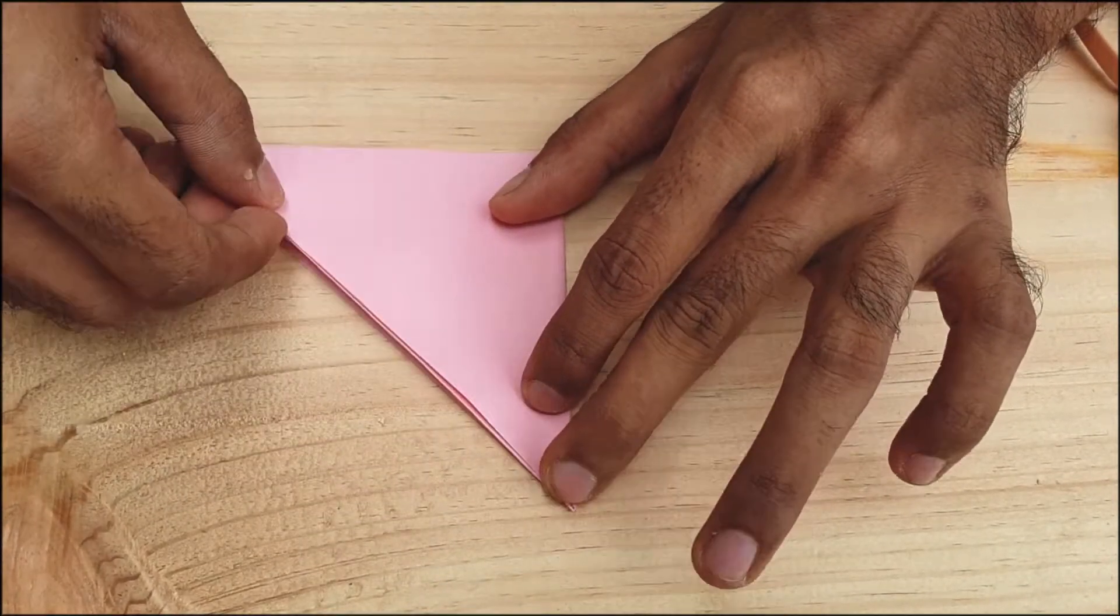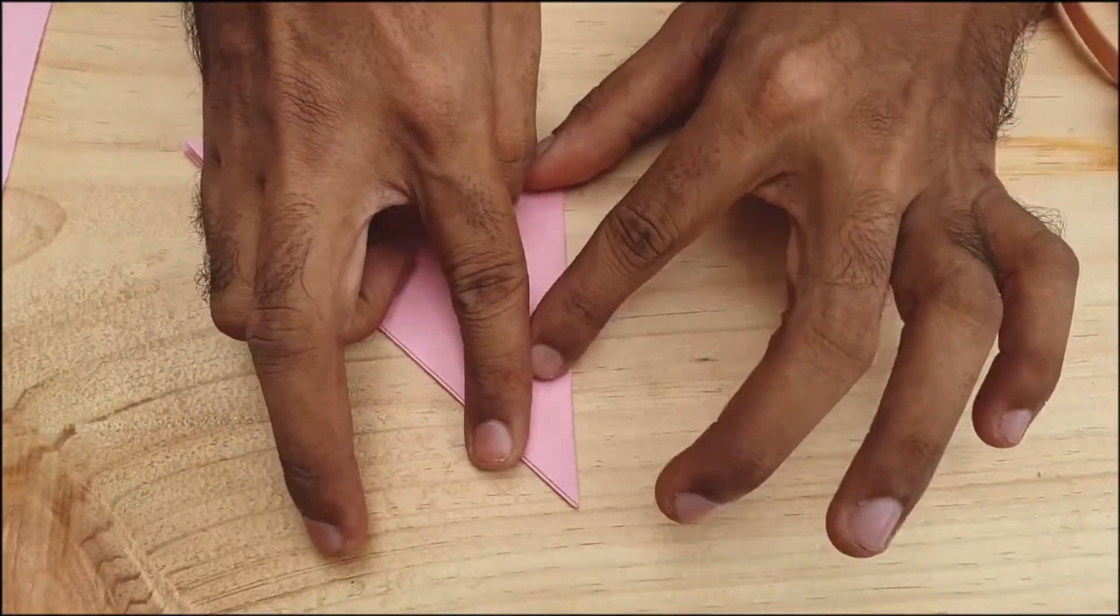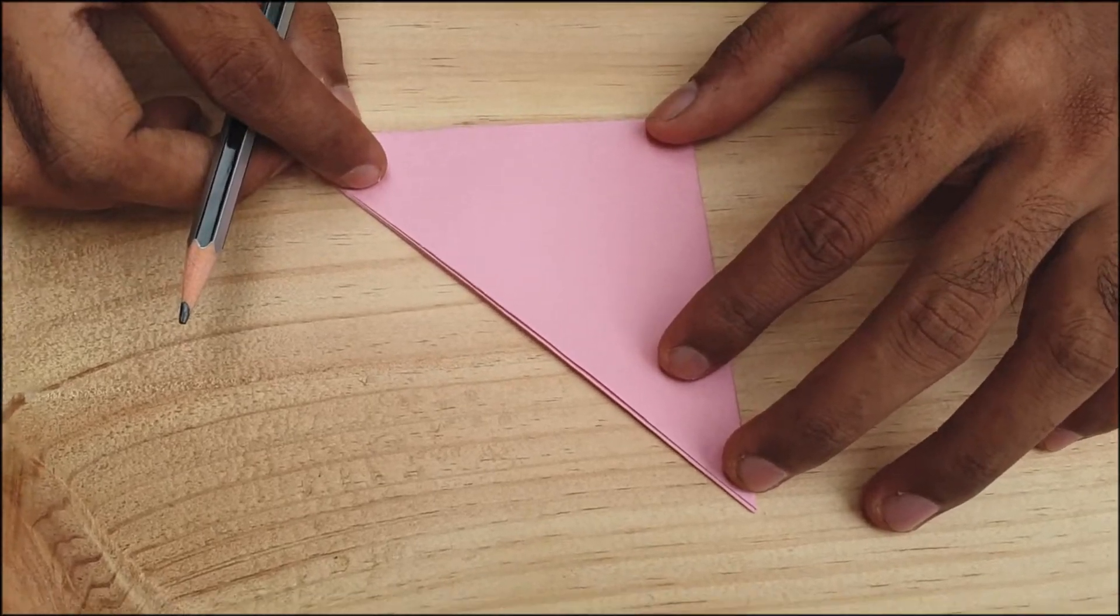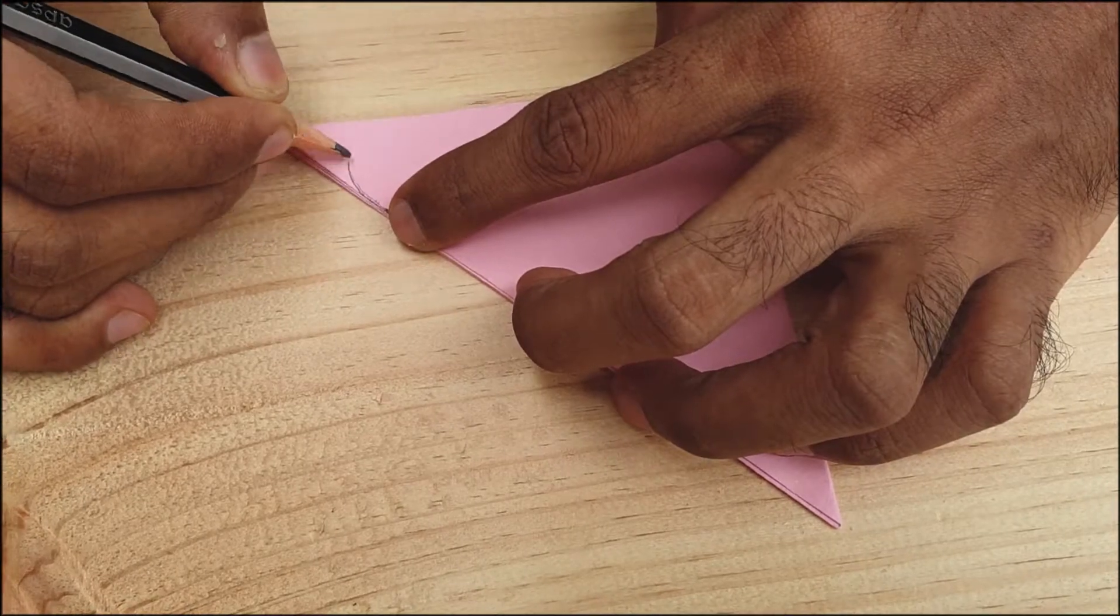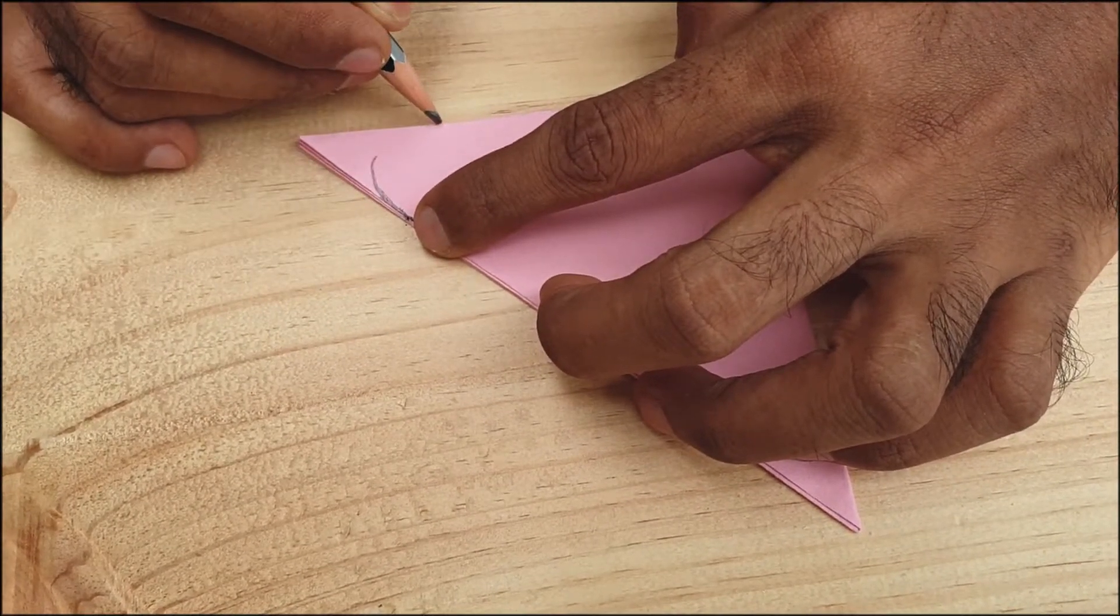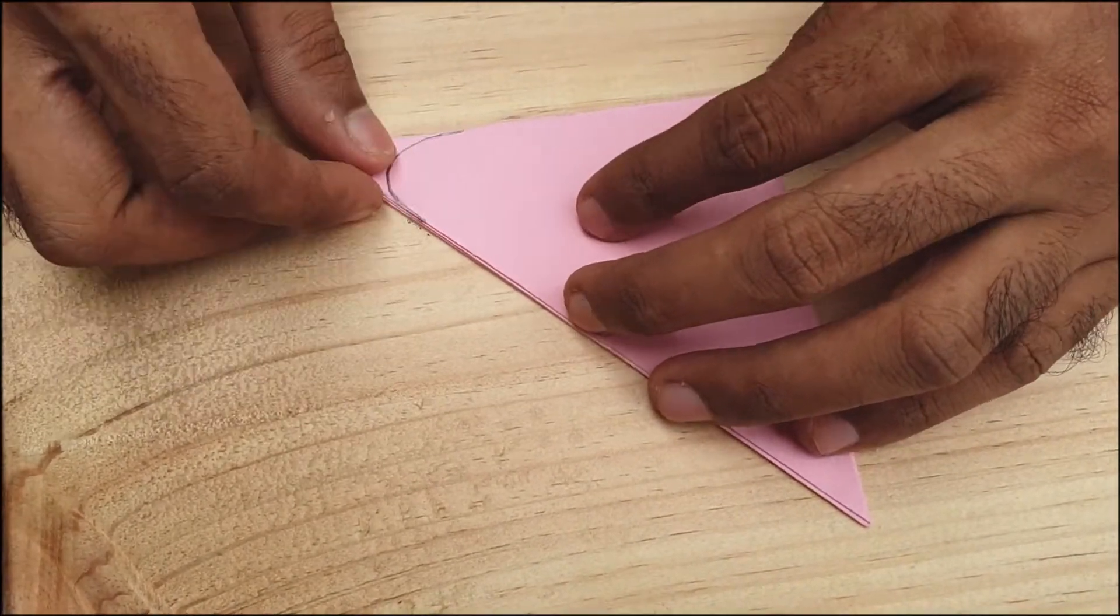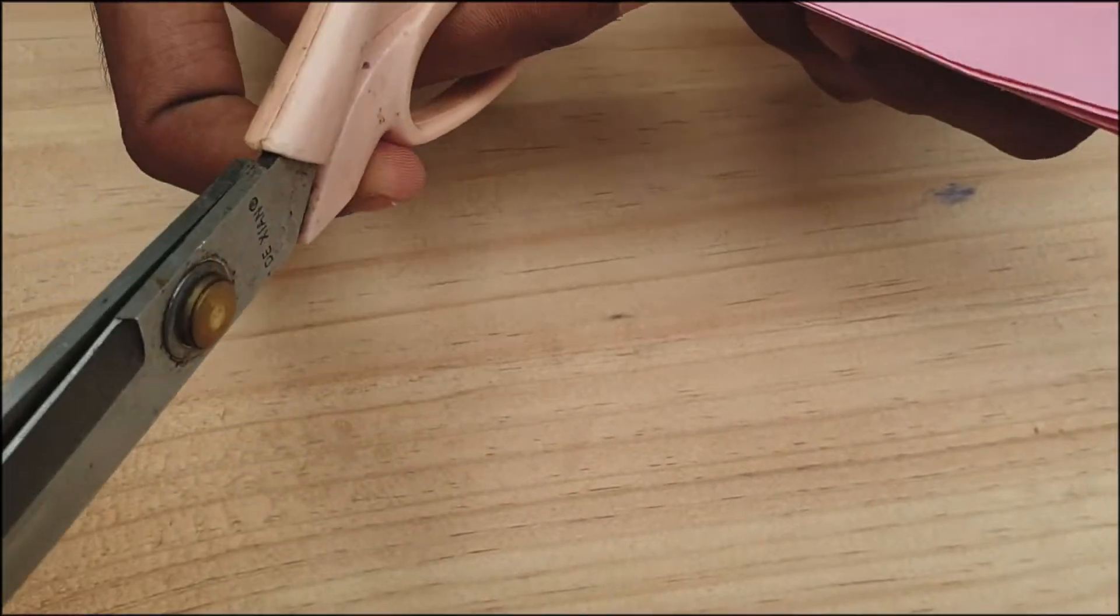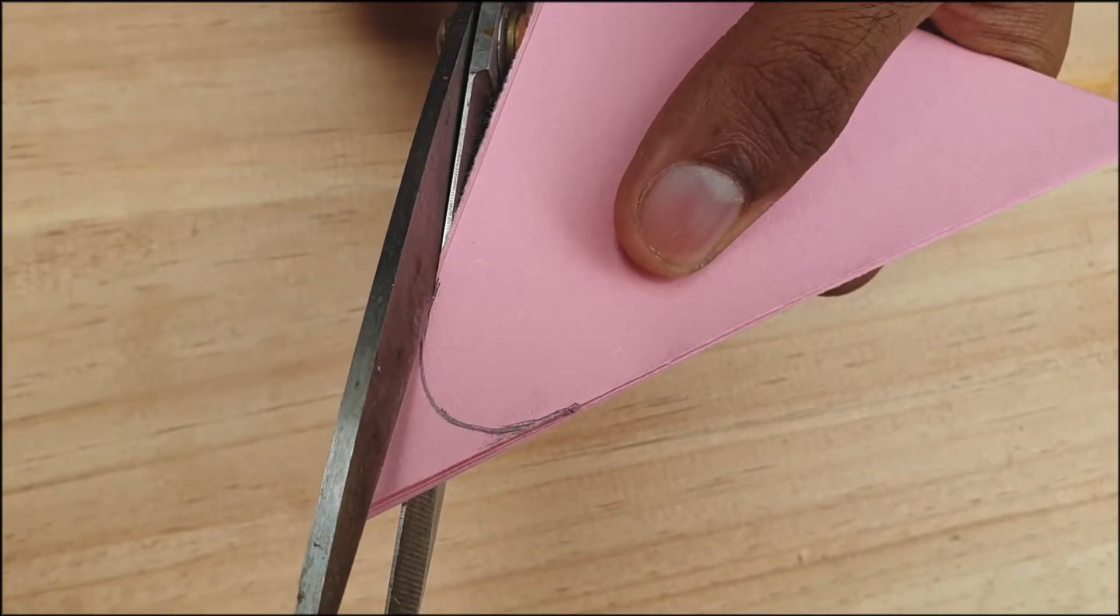Now I am going to cut the unnecessary areas and form this pattern as the wings of a butterfly. I am going to mark with a pencil. Draw a circle pattern at the end of the area. Take the scissor and cut as per the marked line.